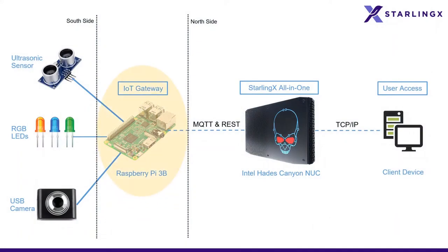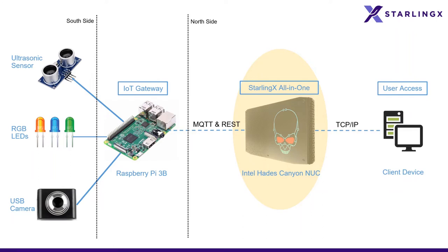The setup includes a Raspberry Pi serving as the IoT gateway, connected to one ultrasonic sensor, red, green, and blue LEDs, and a USB camera. StarlingX is hosted on an Intel Hades Canon Nook with an all-in-one configuration where all three cloud functions — controller, compute, and storage — are on a single device. A client device is used to access the demo dashboard hosted on StarlingX via TCP/IP.